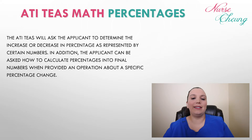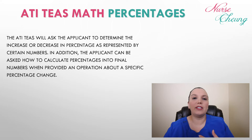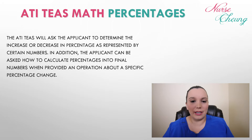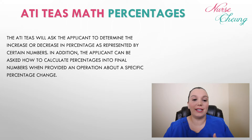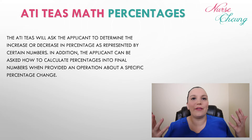The ATI TEAS will ask the applicant to determine the increase or decrease in percentage as represented by certain numbers. In addition, the applicant can be asked how to calculate percentages into final numbers when provided an operation about a specific percentage change. So let's get started figuring all that out.